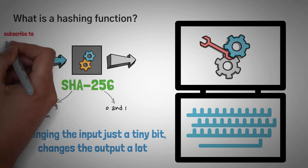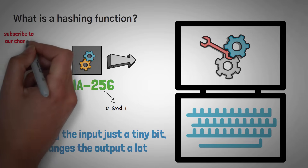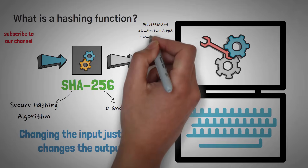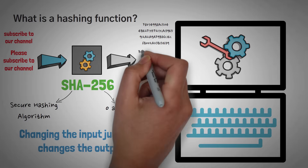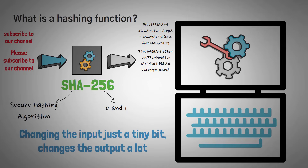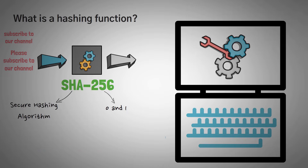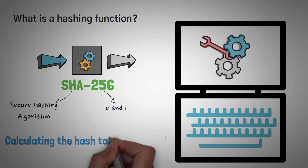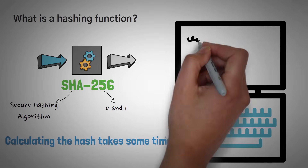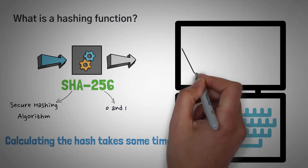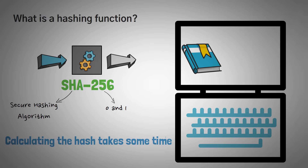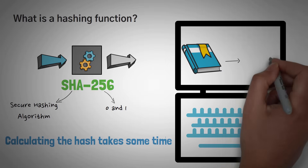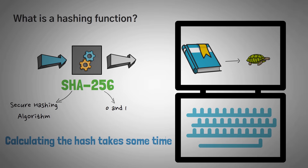So basically, if you do SHA256 of "subscribe to our channel," you get one output. However, if you do "please subscribe to our channel," you get a completely different output — even though we only added one word. And lastly, the third thing you need to know is that calculating the hash takes some time. It might only take a few milliseconds for one tiny string of text, but if you have an entire book, or if you want to check a few million variations of it, it starts to rack up time and computing power.